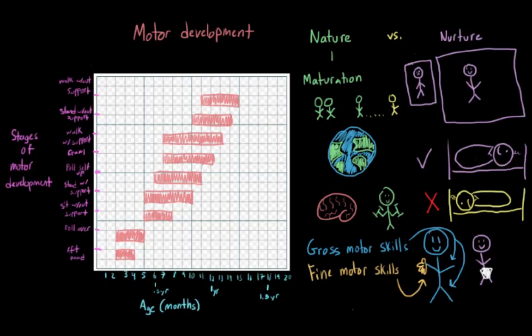So gross motor skills would involve things like sitting up and walking, while fine motor skills would be things like cutting with scissors or coloring a picture. And as you might expect, large muscles like those in our arms and legs tend to develop before small muscles like the ones in our fingers, which explains why we can do things like sit up and walk before we can hold a marker and color a picture.